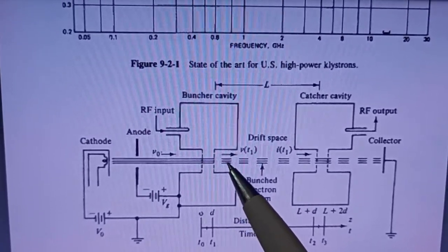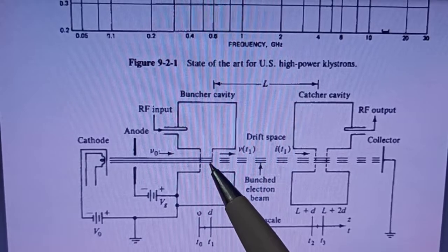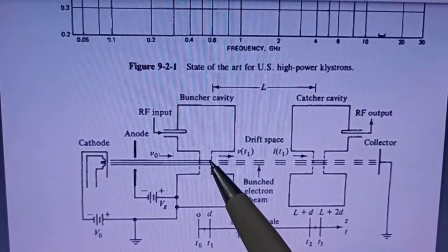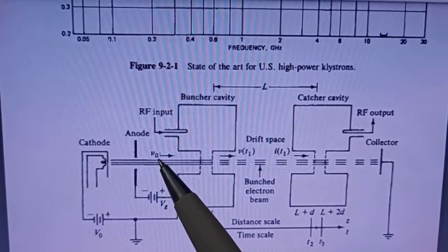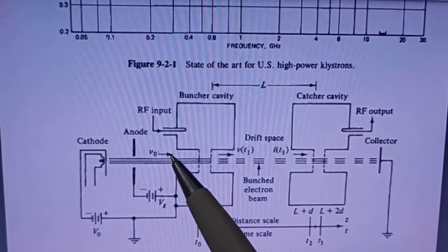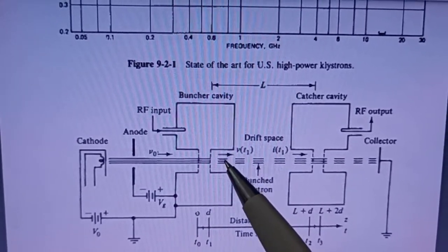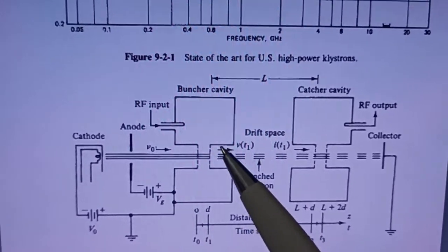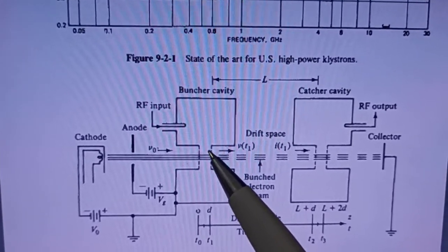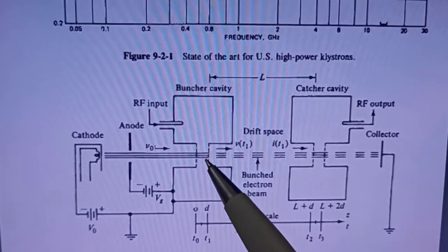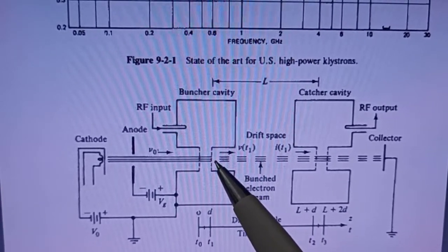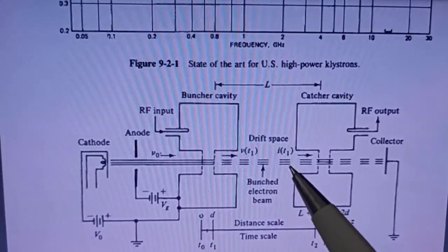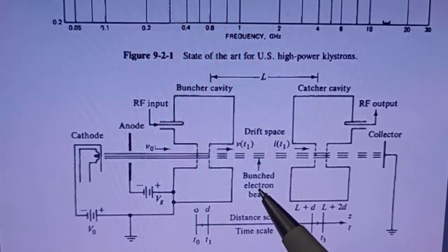After the cavity you see fast moving electrons, slow moving electrons, and some electrons with the same velocity as before. That is why some bunches will be formed — that is nothing but velocity modulation. After the cavity you see bunches of electrons, so these are called a bunched electron beam.